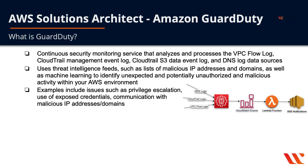Examples include issues such as privilege escalation — when someone unauthorized escalates privilege for a given user — use of exposed credentials, so if you accidentally exposed a key pair and then it was used, and communication with malicious IP addresses and domains. Those are some examples of what will be tracked and reported on by GuardDuty.